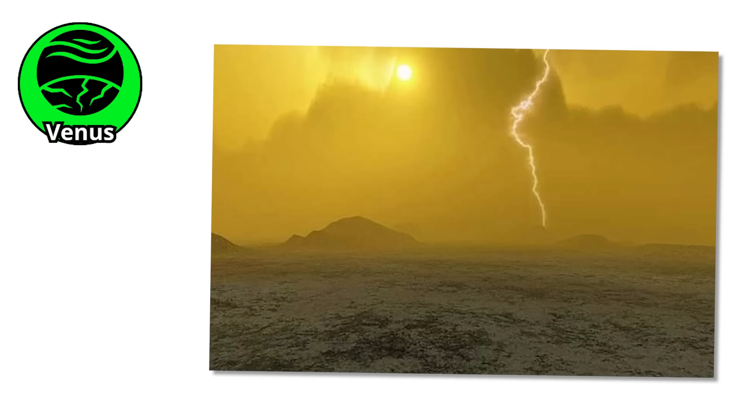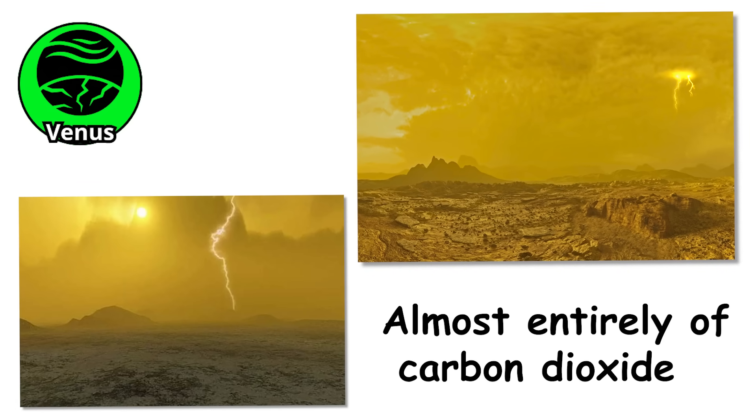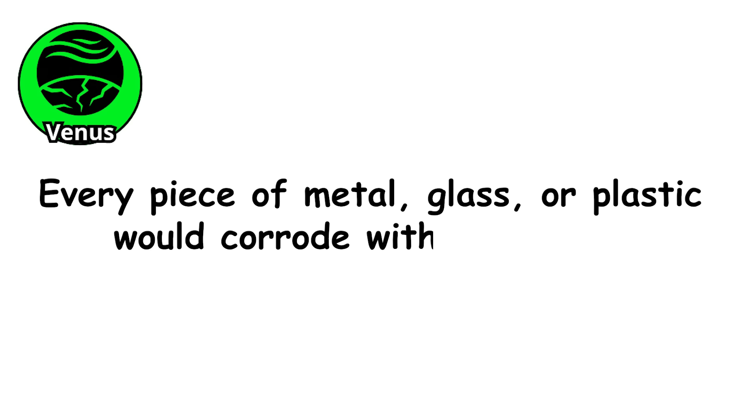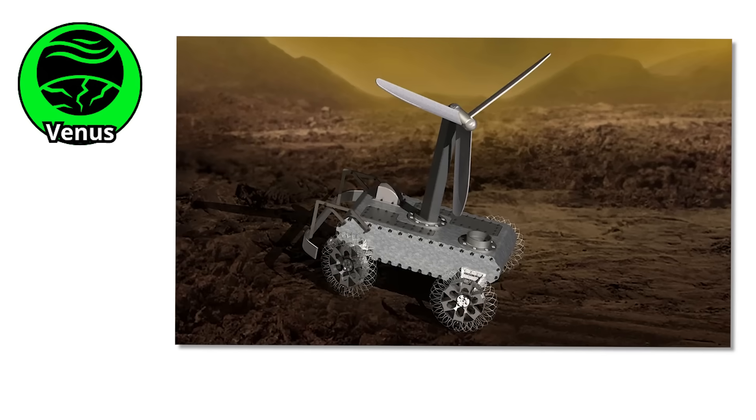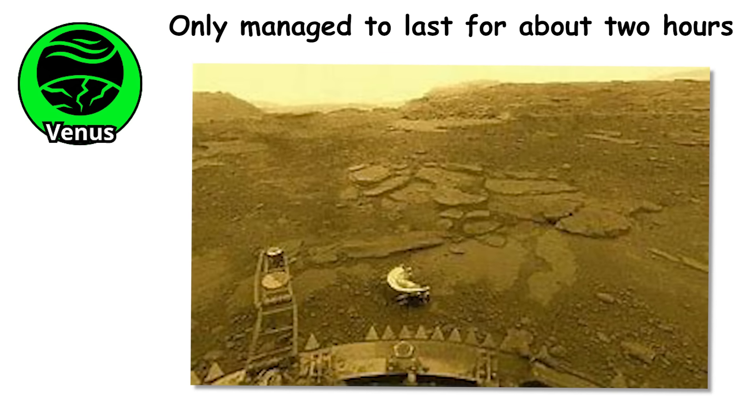And then there is the rain. The clouds are filled with droplets of sulfuric acid that fall through an atmosphere made almost entirely of carbon dioxide. Every piece of metal, glass, or plastic would corrode within moments. Even the most advanced spacecraft ever sent there only managed to last for about two hours before being melted, crushed, and dissolved.